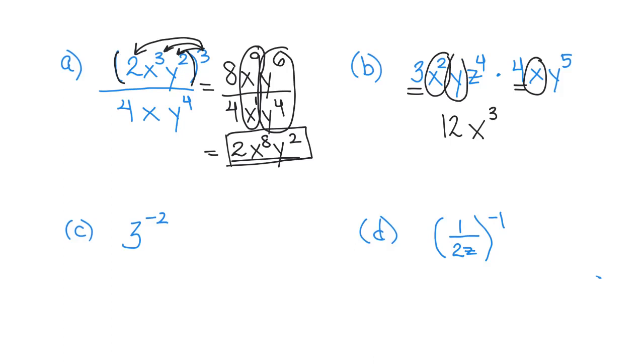And then I have y times y to the fifth. When the base is the same and I'm multiplying, I add the exponents. So 1 plus 5 is 6. And then the last term is z to the fourth. That is my answer.